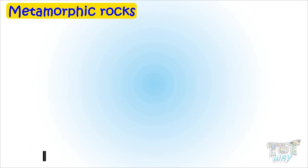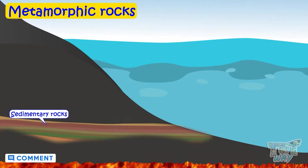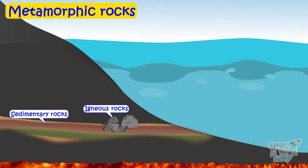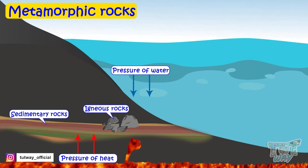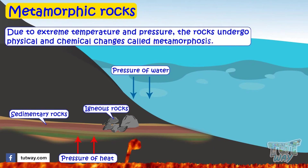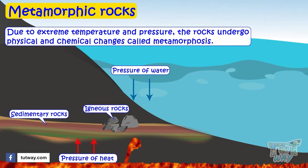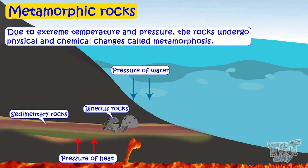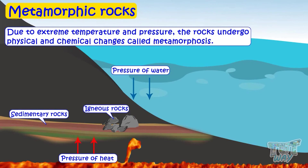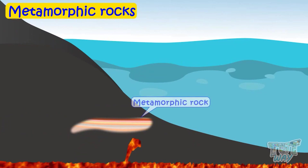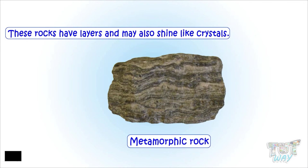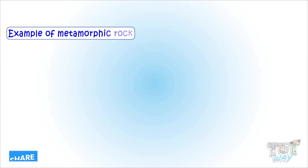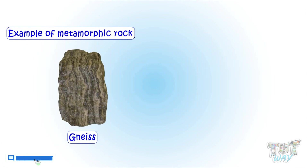Now let's learn about another type of rock called metamorphic rocks. Sometimes sedimentary rocks and igneous rocks are trapped at a great depth beneath the Earth's surface, where there is very high temperature and pressure. This extreme pressure and temperature make the rocks undergo physical and chemical changes called metamorphosis. And sedimentary or igneous rocks change into metamorphic rocks. These rocks have layers and may also shine like crystals. Examples of metamorphic rocks include gneiss and marble.